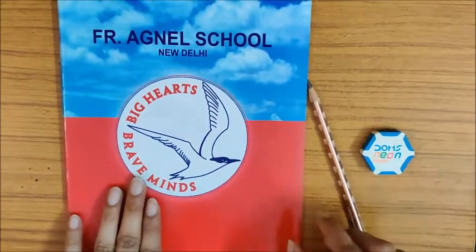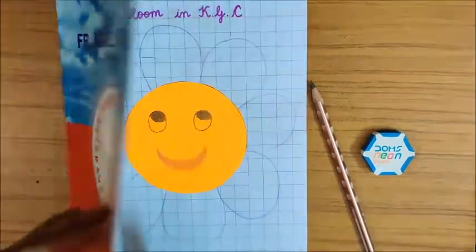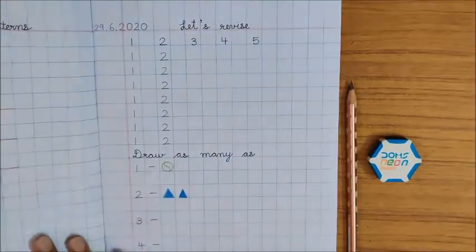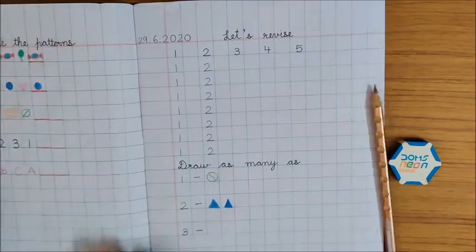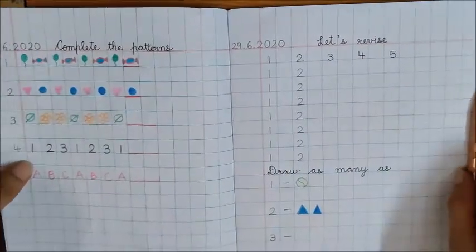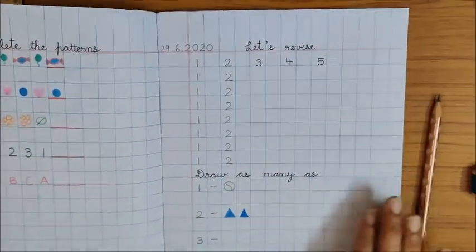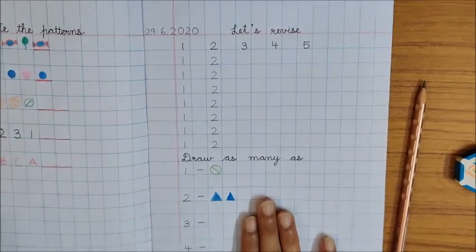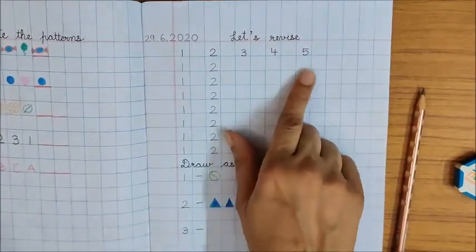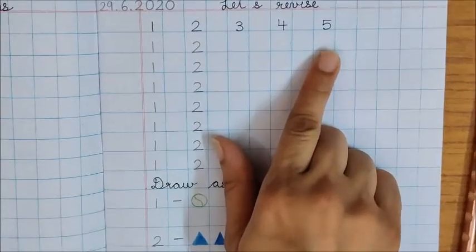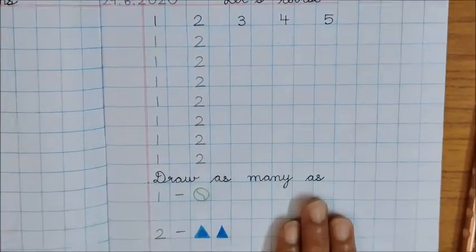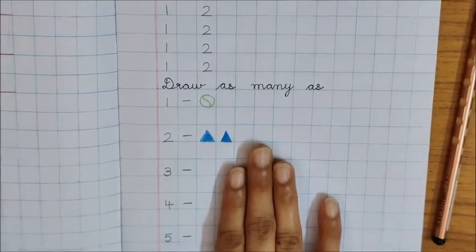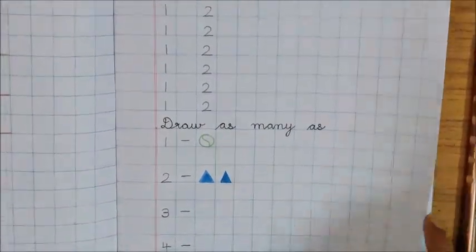So let us open the book now. This is your flower. Then complete the Parents page. And this is your revision of numbers 1, 2, 3, 4, 5, which you have done now. And here you drew the pictures according to the numbers. Now turn the page.